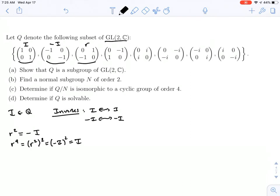So R has an inverse, namely R cubed. But we can do even a little better. R cubed is R times R squared. And we just showed that R squared was negative I. So this is R times negative I, which is negative R.